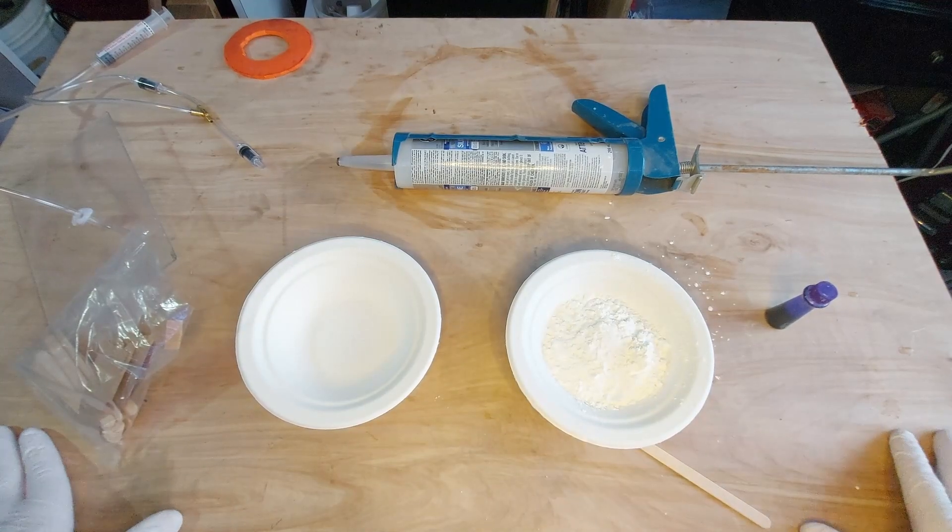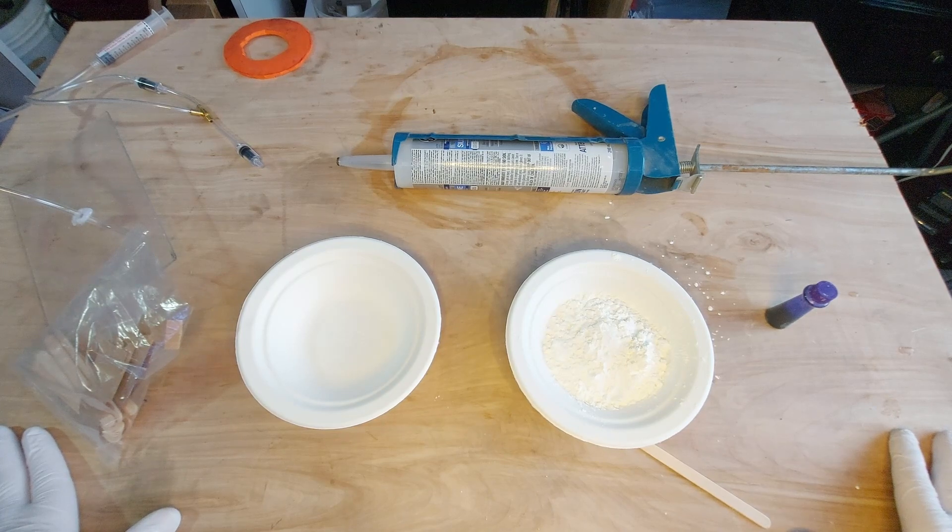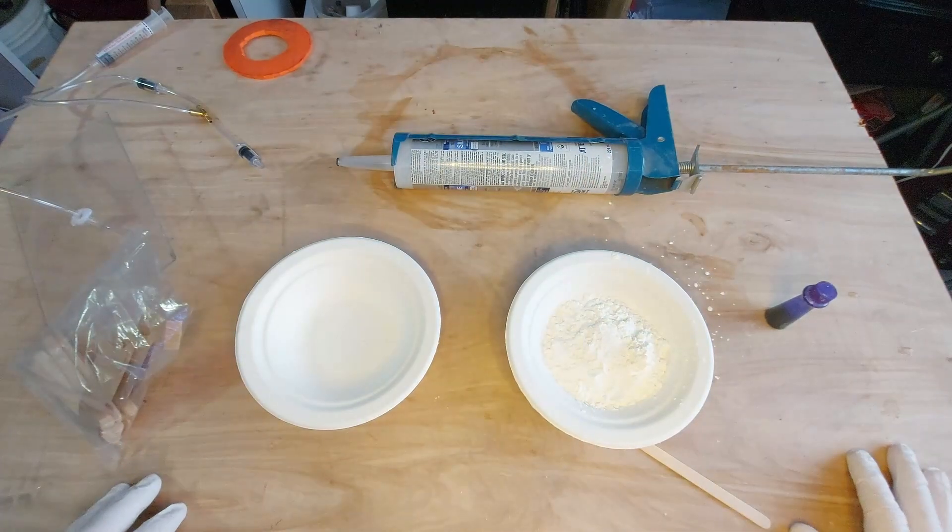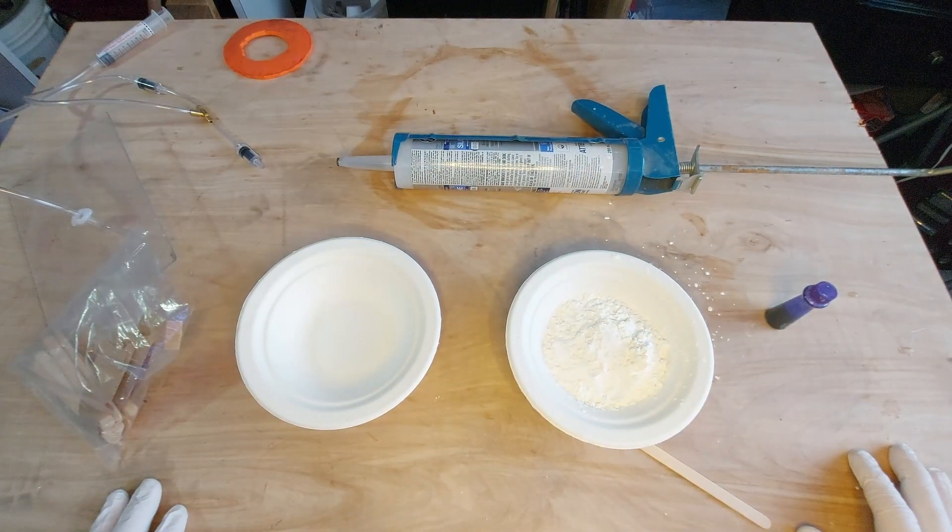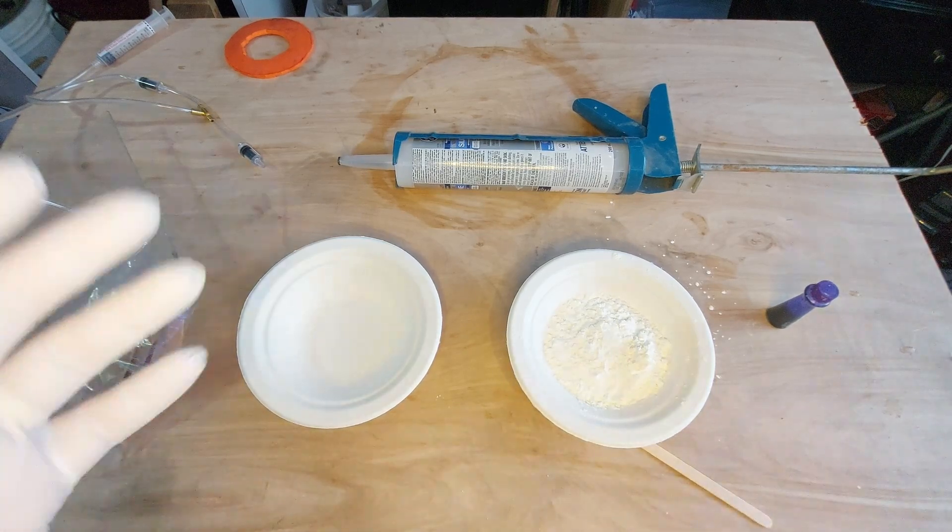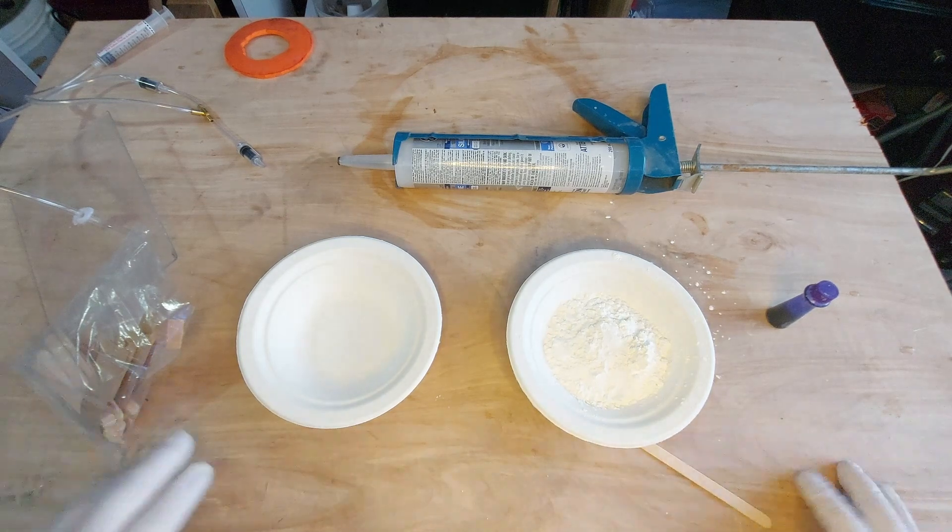Okay, so to make proto putty you're going to need a couple things and in my opinion the most important thing you're going to need is rubber gloves. This stuff is sticky and if you get it all over your hands it is a pain in the butt to clean up. So get some rubber gloves, wear them, easy cleanup.